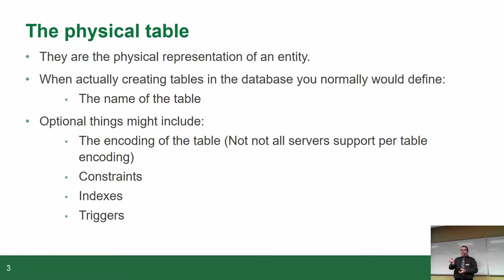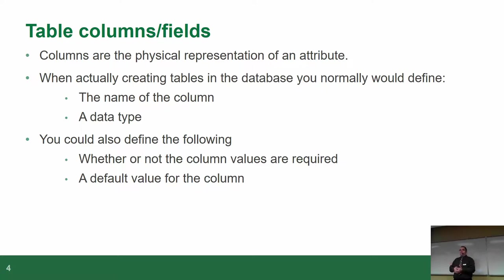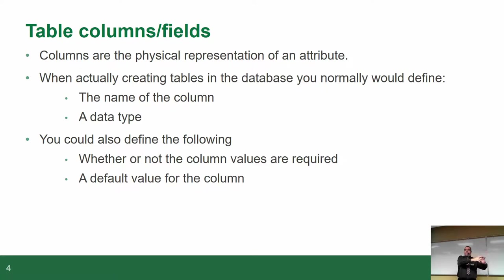Constraints are rules — I'll be talking about those in a few minutes. Indexes come later in the term, and triggers are the last thing I talk about this term. But when you design a physical table, these are some of the things that are included. Table columns and fields — you'll hear me use the word 'column' or 'field,' they mean the exact same thing; they're just alternative terminology. When we talked about entities, the entities have attributes. Attributes become columns. So when you're doing conceptual diagramming you've got entities and attributes; physical, you've got a table with columns or fields.